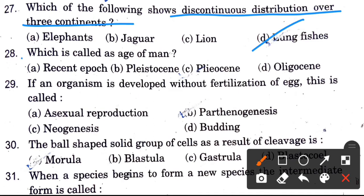Which is called the age of men? Options are Recent epoch, Pleistocene, Pliocene, and Oligocene. The answer is the Recent epoch.